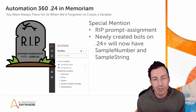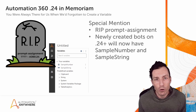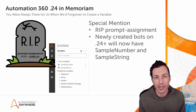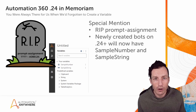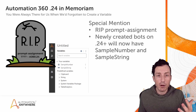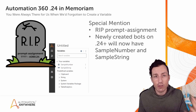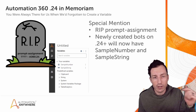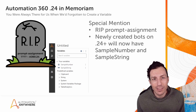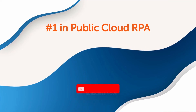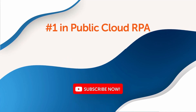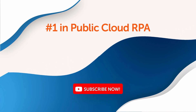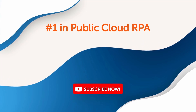Thanks so much for hanging out for the top five developer features of Automation 360.24. Be sure to like and subscribe for more Automation Anywhere content — let us know in the comments what other content you want to see. Did I miss anything you've been excited about in .24? Let me know below. My name is Micah Smith — go be great! Every time you click the like button on an Automation Anywhere video, a bot gets its wings. Like and subscribe so you don't miss any upcoming tutorials and full bot builds.